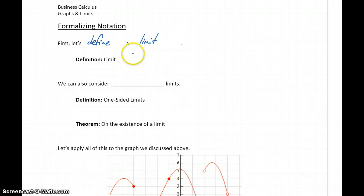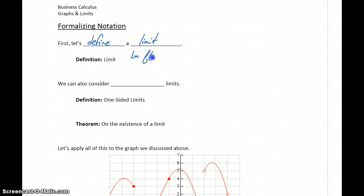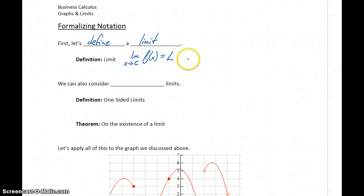The first thing we'll need is some notation. So LIM is shorthand for limit. We want to evaluate the limit of our function f of x, whatever that given function is, as x approaches some value c. We can say that that limit equals some value L if our function value f of x gets closer and closer to that value.